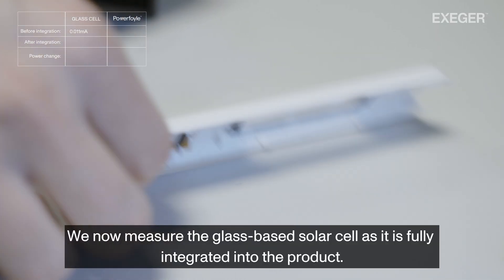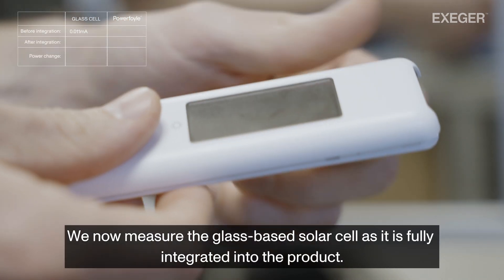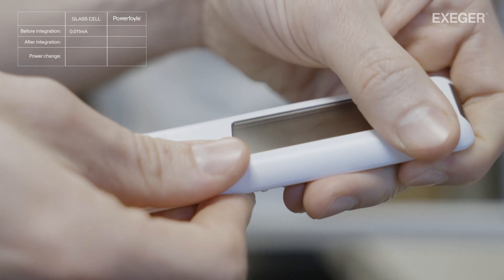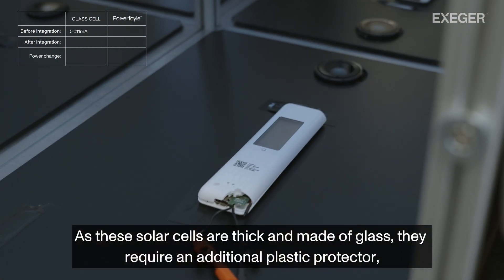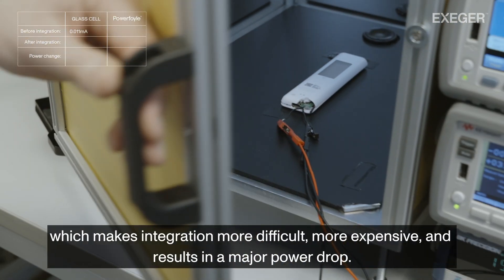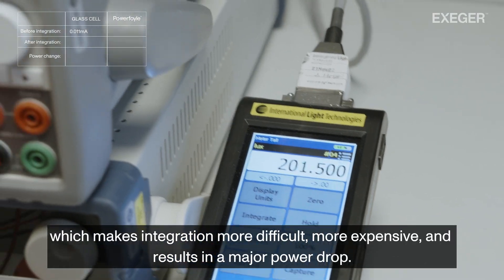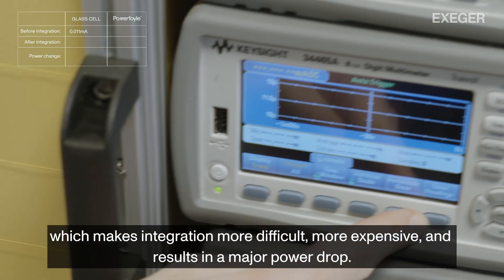We now measure the glass-based solar cell as it is fully integrated into the product. As these solar cells are thick and made of glass, they require an additional plastic protector, which makes integration more difficult, more expensive, and results in a major power drop.